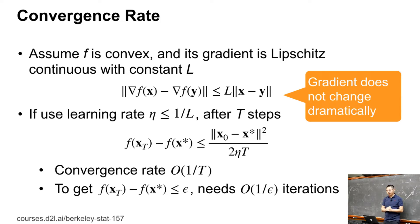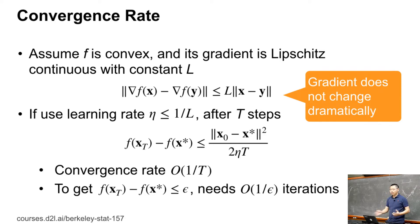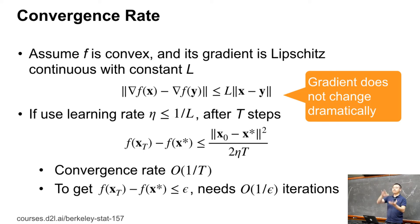Here are some basic results for gradient descent. Assume f is convex and its gradient is Lipschitz continuous with constant L. That is the key assumption: given any x and y, the difference between the gradients should be less than or equal to L times the distance between x and y. This gives a smoothness assumption.